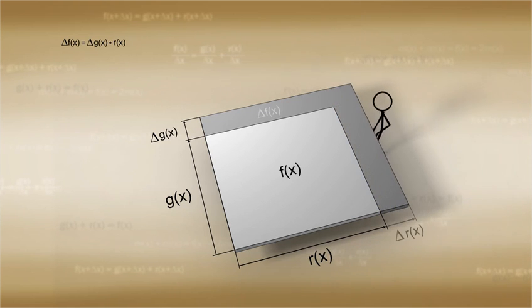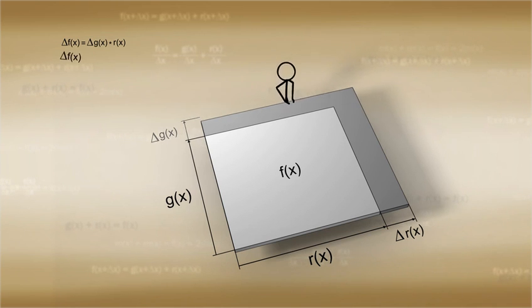If the function r(x) is the only one that changes, then the formula is Δf(x) is equal to g(x) times Δr(x).